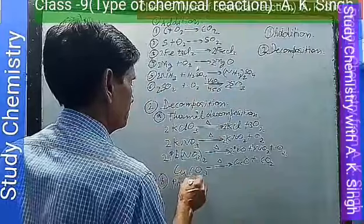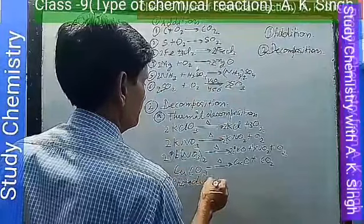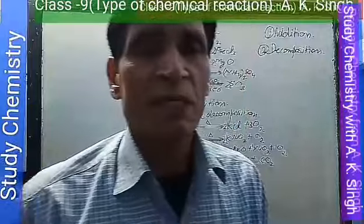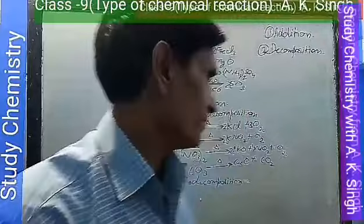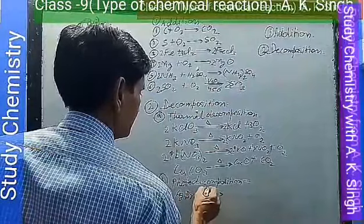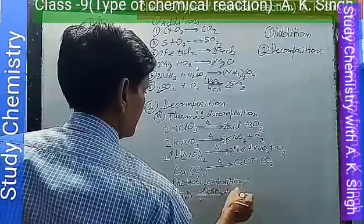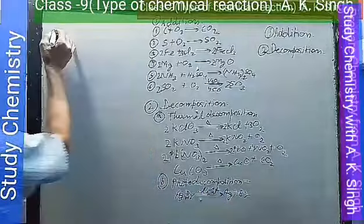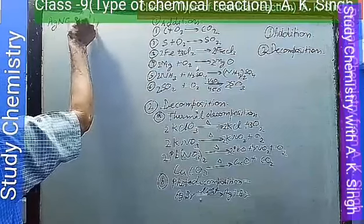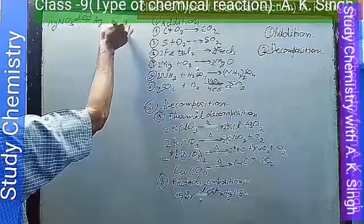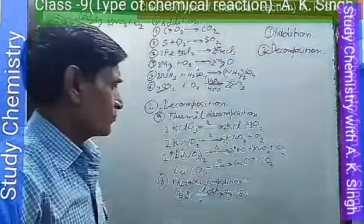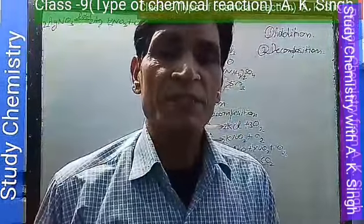Number two — photodecomposition reaction: a chemical substance undergoes decomposition in the presence of light. For example, AgBr in the presence of light forms Ag and Br. Another example: AgNO₃ in the presence of light decomposes to form Ag, NO₂, and O₂. These are photodecomposition reactions — decomposition that occurs in the presence of light.